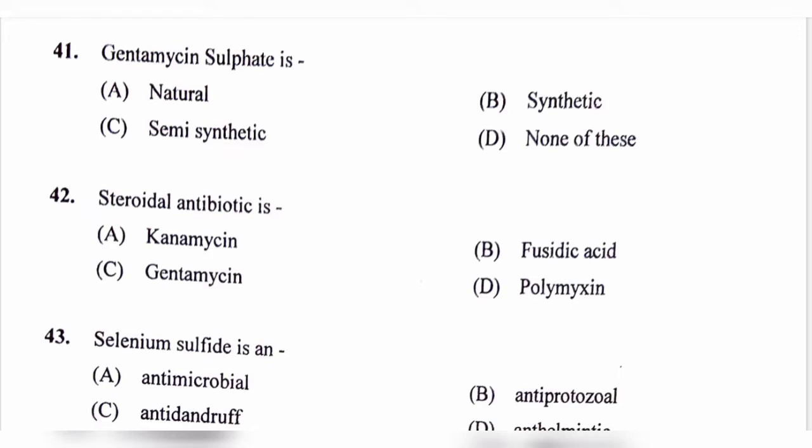Question number 42. Steroidal antibiotic is: option A, Kanamycin; option B, Fucidic acid; option C, Gentamicin; option D, Polymyxin. The correct answer is option B, Fucidic acid.